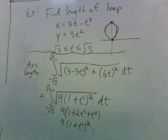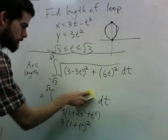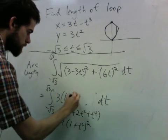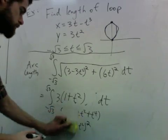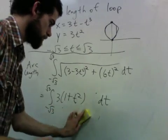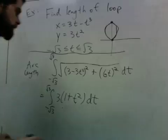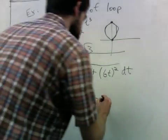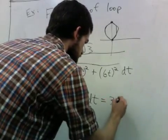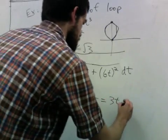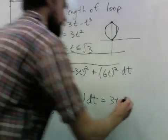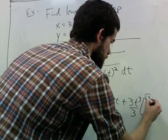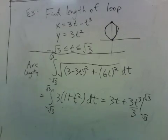After we take the square root, we're really just computing the integral of 3(1 + t²), which is no problem. We have 3t plus 3t³ over 3, evaluated from negative root 3 to root 3.